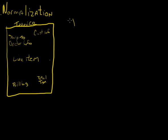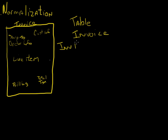Let's say I create a table with nothing normalized — just representing this invoice. I'll have this invoice table. The types of things I'm going to have: probably a unique identifier like an invoice number, customer last name, customer first name, customer address, and a whole bunch of other stuff.